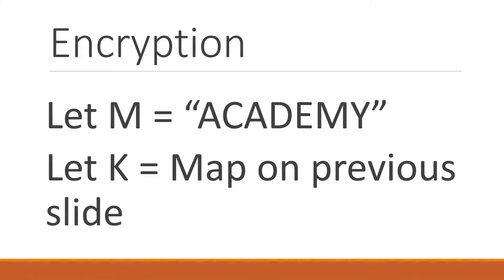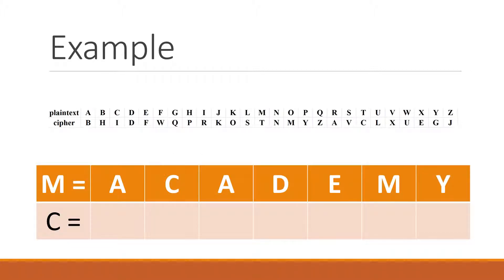Let's do an example. Let m be "academy" and let k be the map that was on the previous slide. We see that the instances of a, given the key, should map to b in the ciphertext, and the instances of c in the plaintext should map to i in the ciphertext, and then a will map to b again.